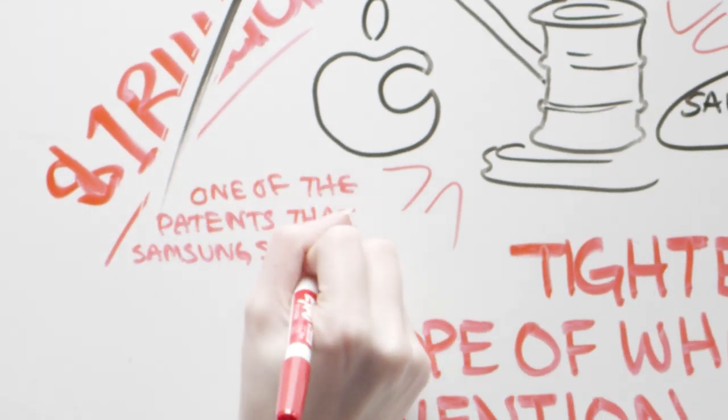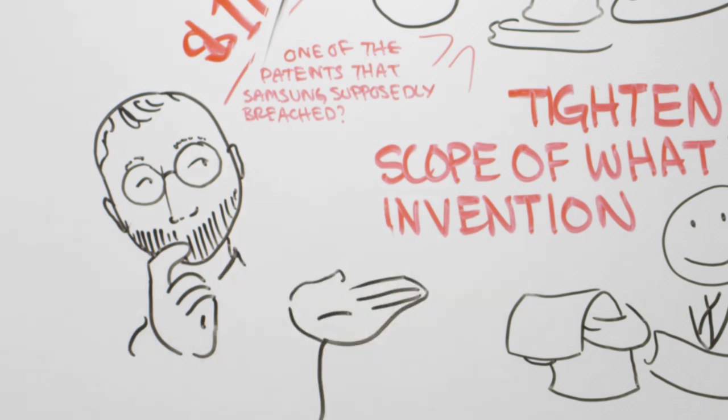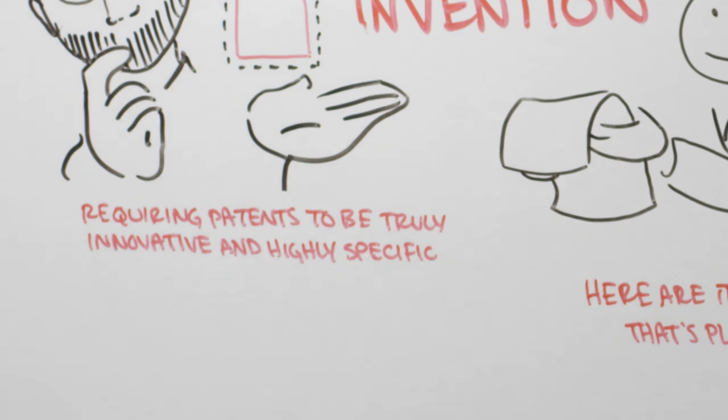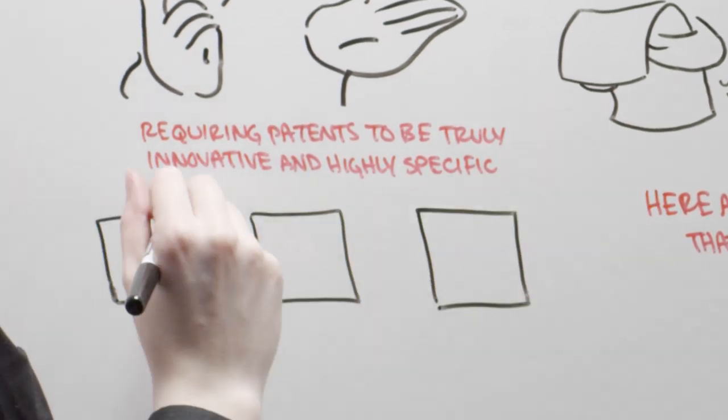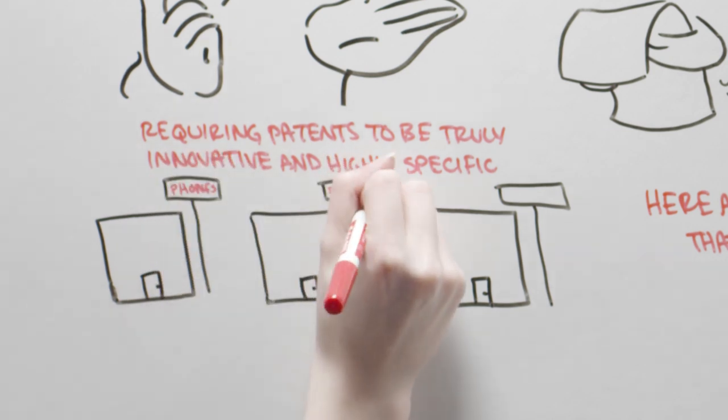One of the patents that Samsung supposedly breached? Apple's notorious patent on the shape of their iPhone, a rectangle. By requiring patents to be truly innovative and highly specific, fewer people will be granted patents, and innovation and competition from other companies can happen without a lawsuit waiting around every corner.